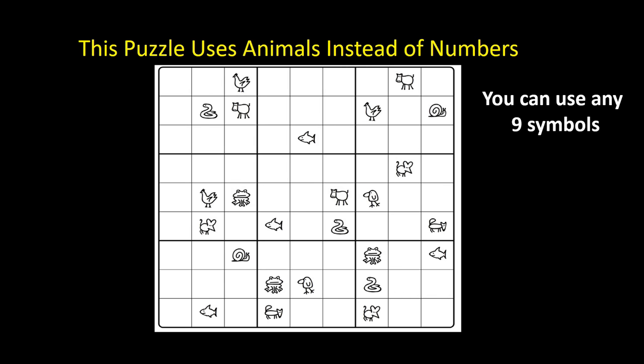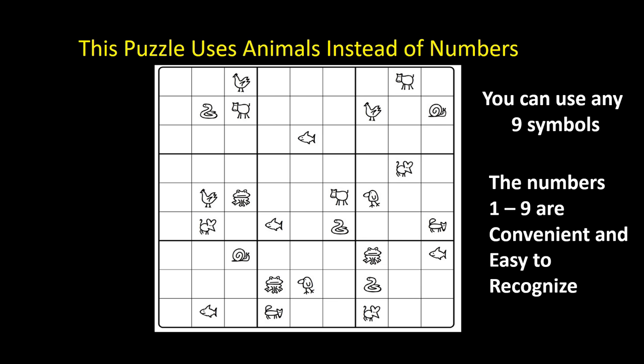You can use any nine symbols or letters for Sudoku, but it's a lot easier using the numbers one through nine. That's because they are convenient and easy to recognize symbols, and since the puzzle requires nine different symbols, it's much easier to use the numbers one through nine. So, Sudoku doesn't have anything to do with math except that it uses numbers or digits as symbols.